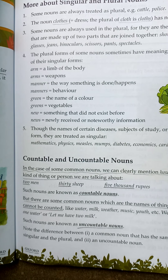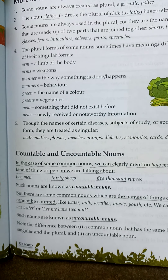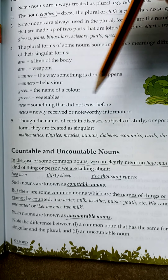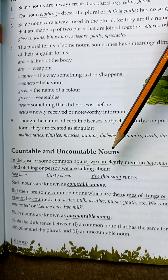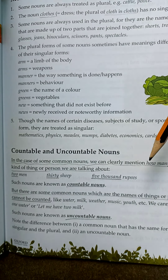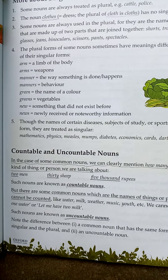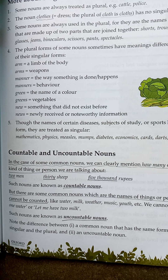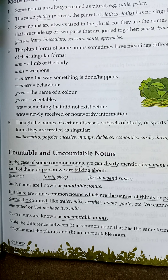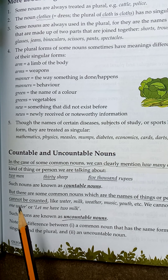In our previous lecture we discussed about singular and plural nouns. Today we will discuss about countable and uncountable. Countable things you can easily count. Uncountable — you cannot count them. In the case of some common nouns, we can clearly mention how many of the same kind of thing or person we are talking about: two men, thirty sheep, five thousand rupees. Such nouns are known as countable nouns — where we know exactly how many things are involved: one, two, three.